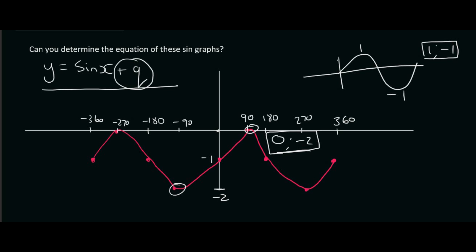Have they moved the graph upwards or downwards? Well they've definitely moved it downwards. We can clearly see that that's a normal sin graph, whereas this graph has moved down.